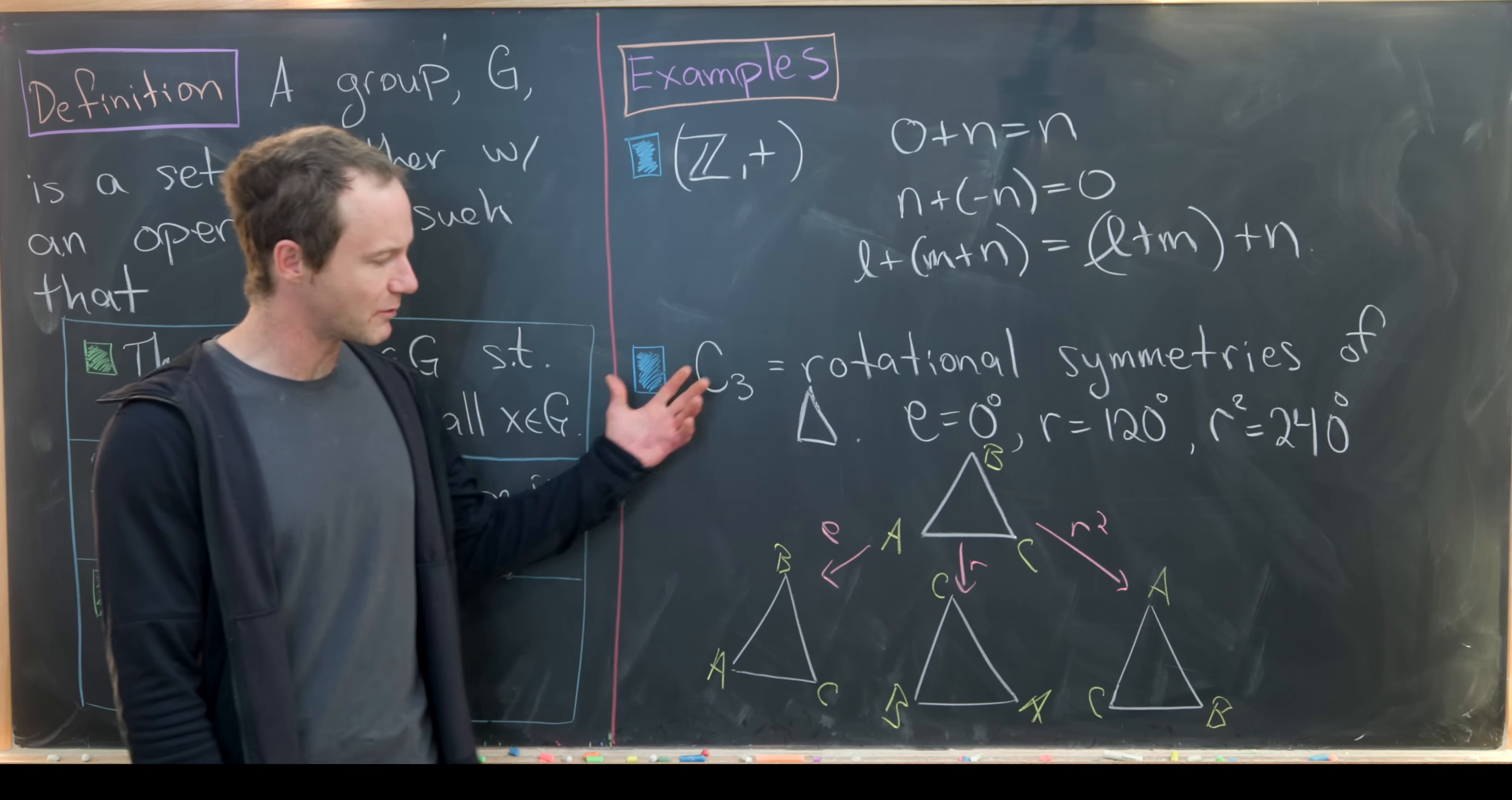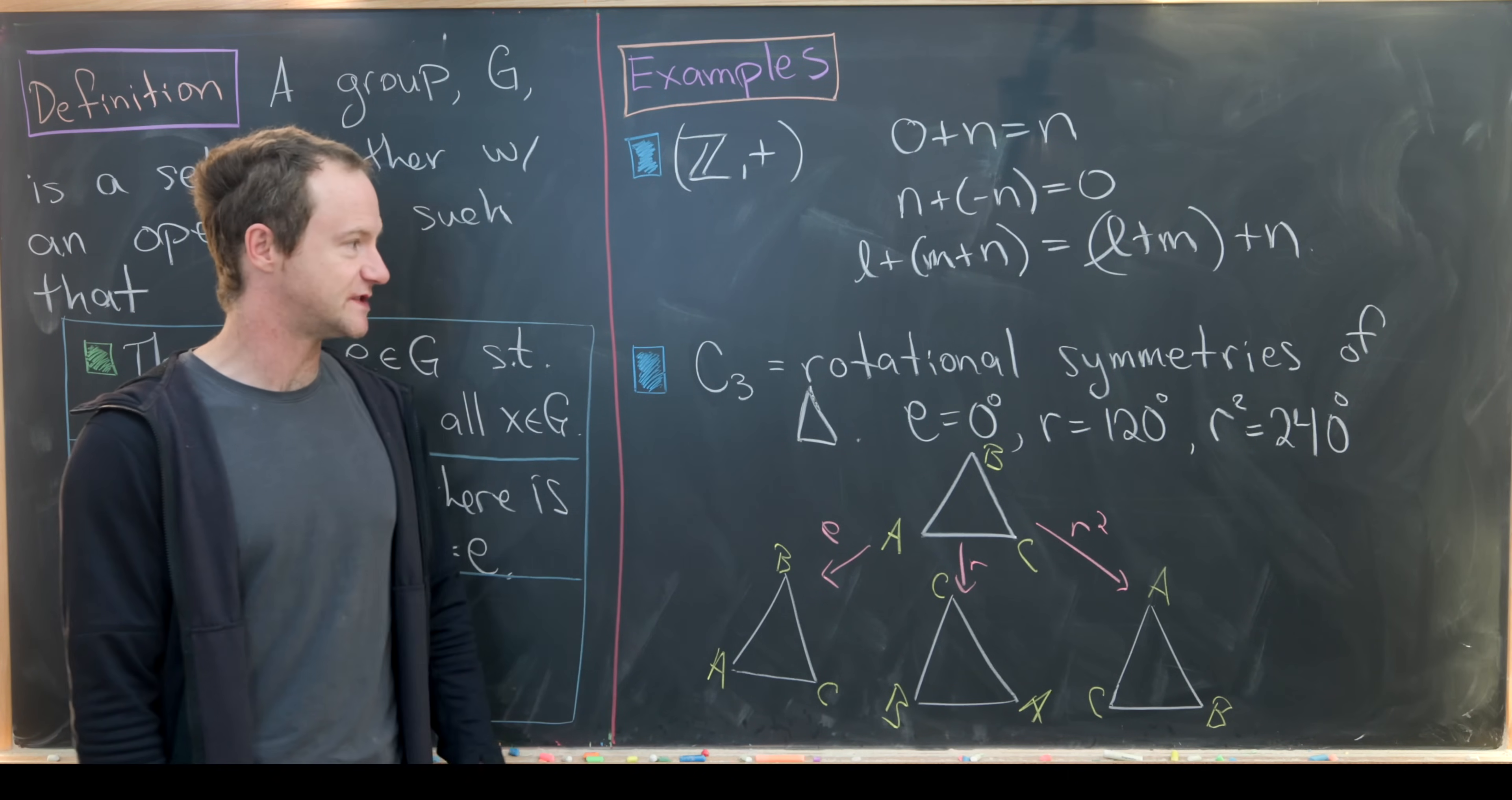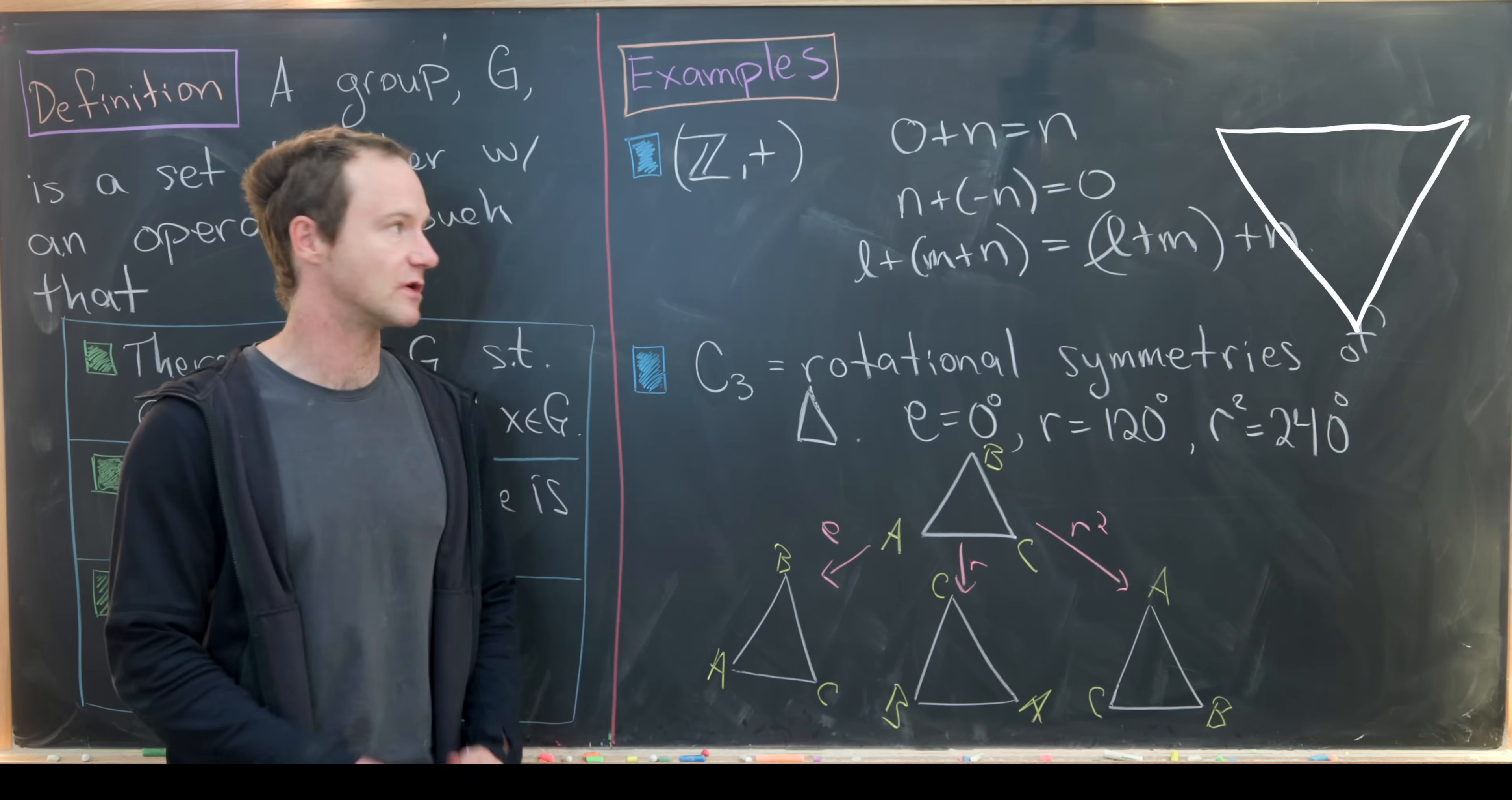Let's look at a more geometric example. That would be something I'll call C3, which is the cyclic group with three elements. It can also be seen as the rotational symmetries of an equilateral triangle. In this case, E will be a zero degree rotation, R will be a 120 degree rotation, and R squared will be a 240 degree rotation.